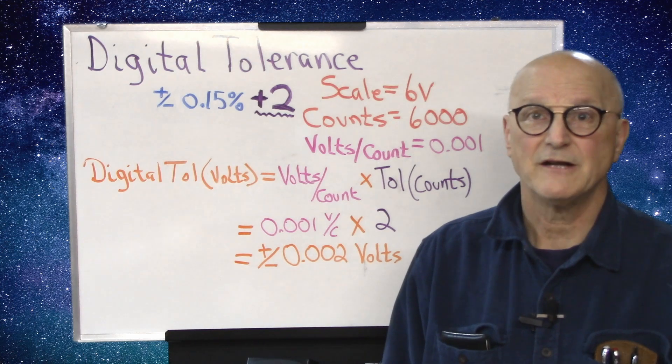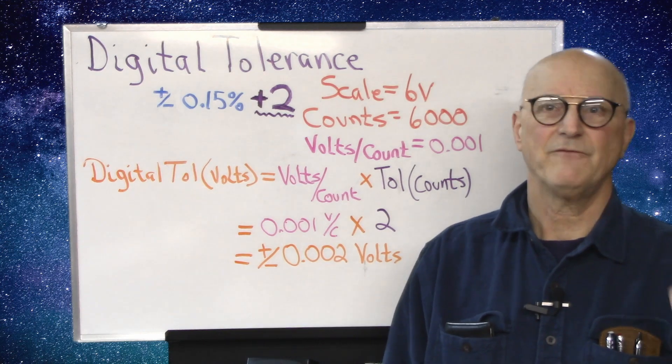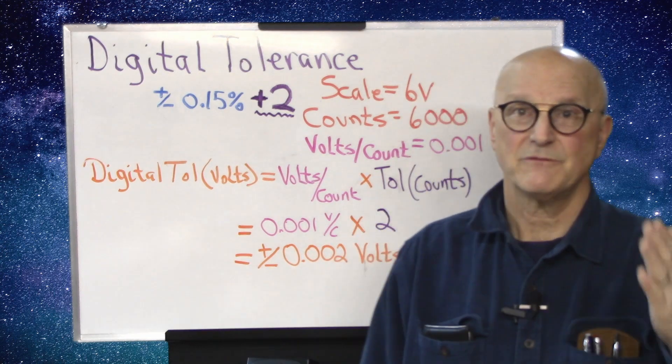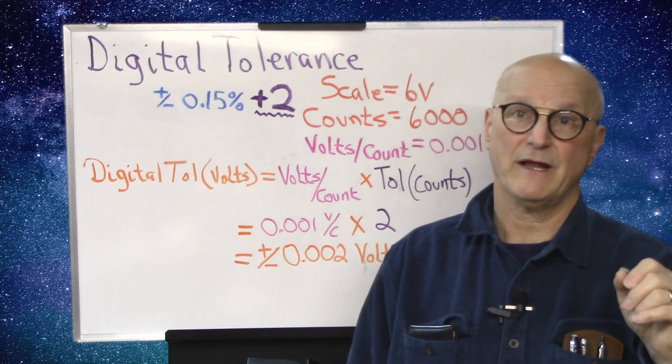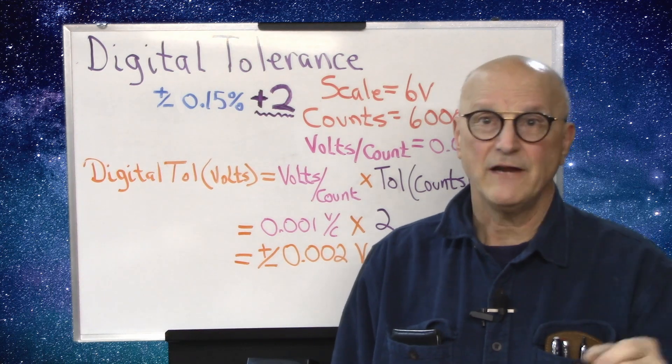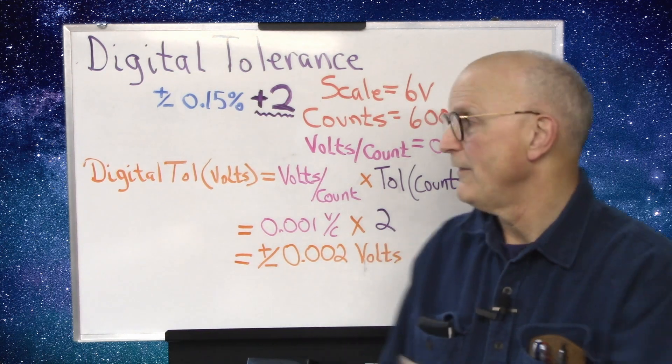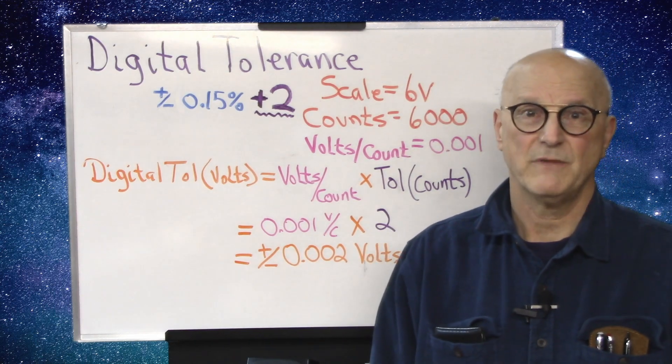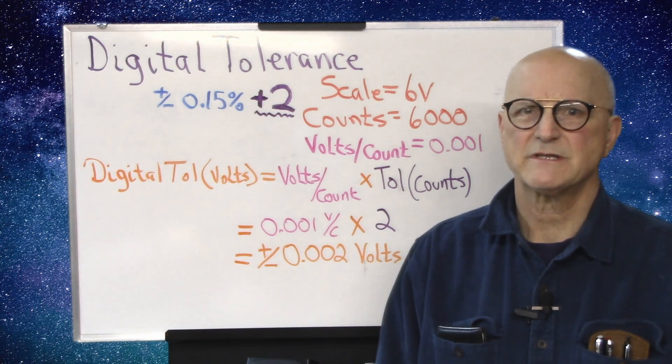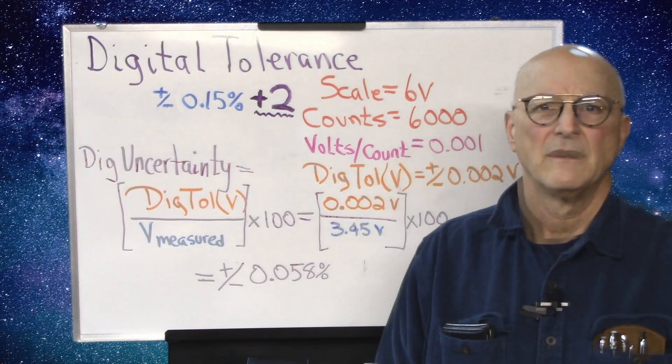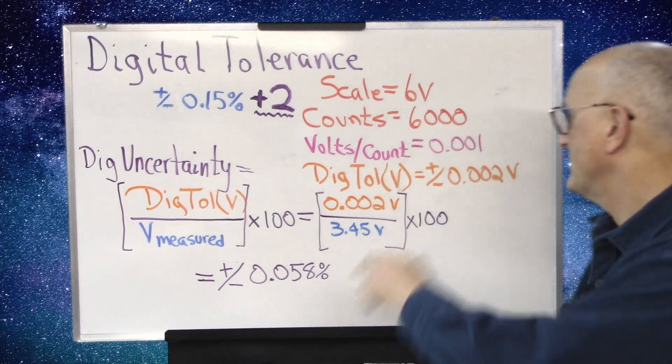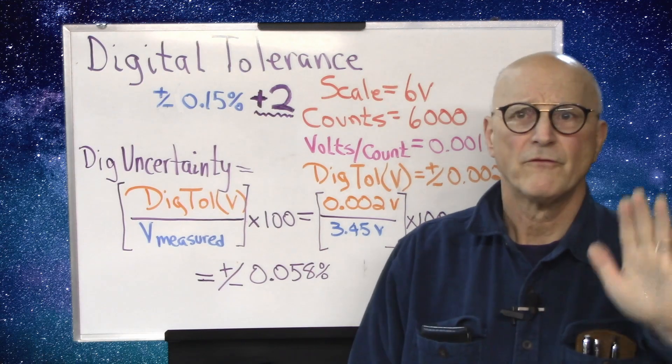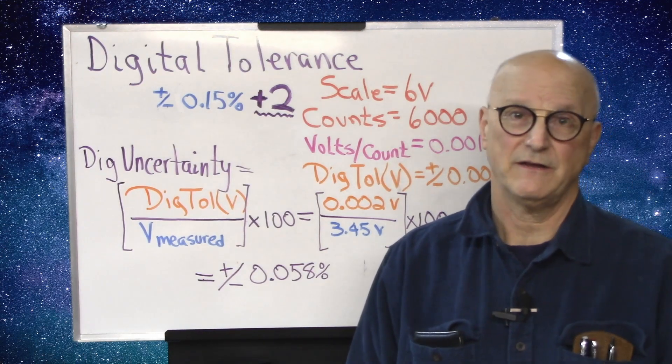This digital measurement uncertainty is the same for anything I measure on this 6-volt scale. So it doesn't matter if we're talking about measuring a 0.5-volt signal or a 5.5-volt signal. This error is going to be there for any of those measurements.